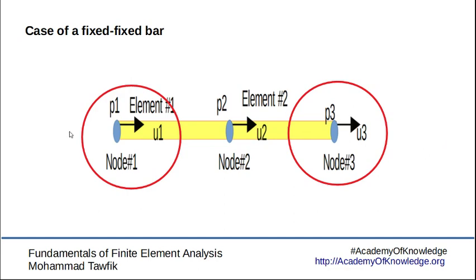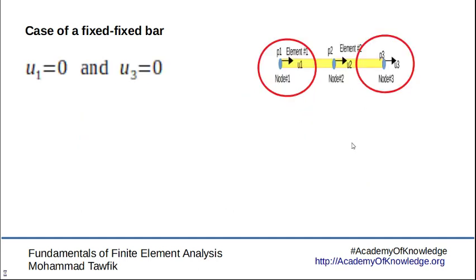If we have another case where we are fixing the bar from both sides, so I know u1 and u3, and they are supposed to be equal to zero.